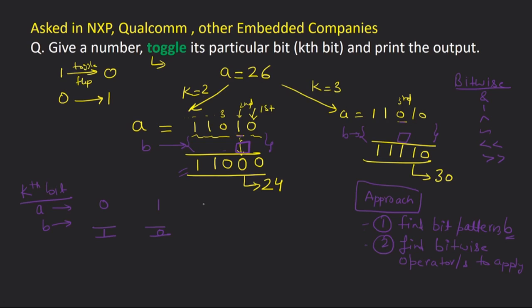Let's try the bitwise OR operator. If I place 1 in B: OR of 0 and 1 gives 1 — correct — but OR of 1 and 1 gives 1, not 0, so 1 does not give the desired output. If I place 0 in B: OR of 0 and 0 is 0, not 1, so that also fails. OR does not work.